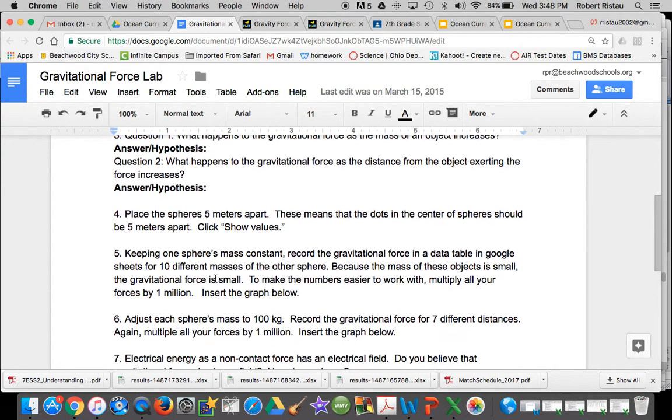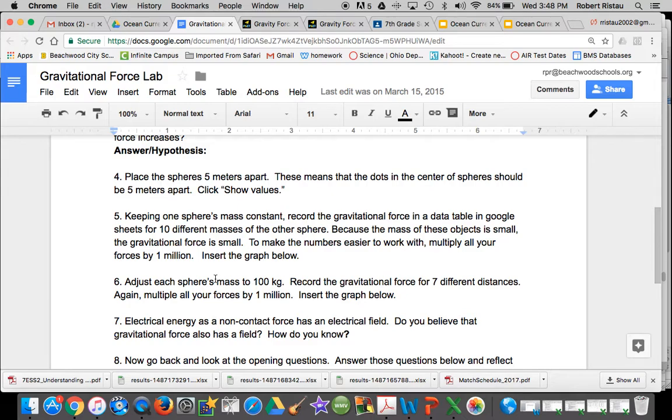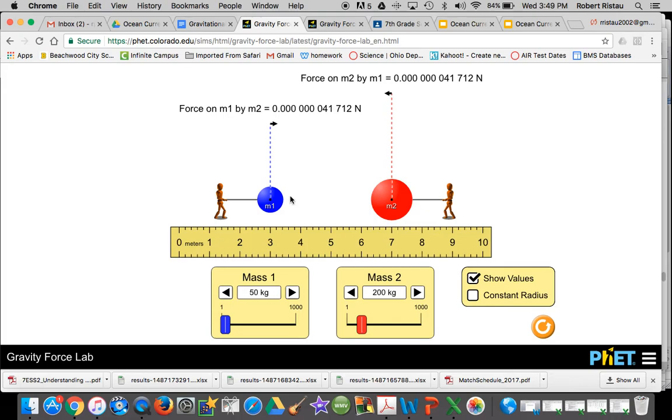Then you just kind of follow the directions. There's just really one weird thing that I want to show you with this and that has to do with when you're looking at these values. First of all, it tells you the directions that you're using the dot in the middle of this sphere here as your marking place. If it says to move them 5 meters away, that means 5 meters from the center of that sphere.